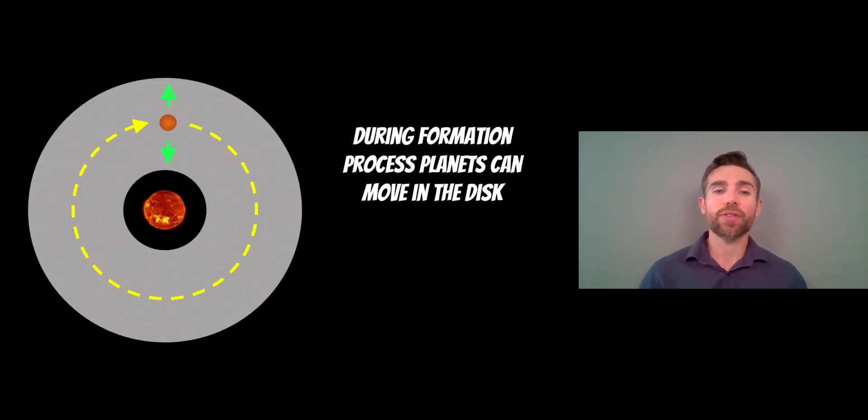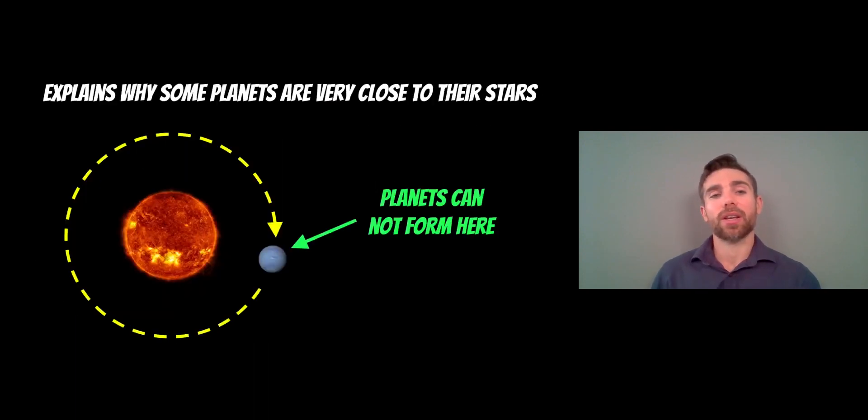During the formation process these planets can move around in this disk. In this gas disk the planets can move inwards and outwards. There are a few different types and that will dictate how it moves and how it migrates. It also explains why some planets are quite close to their stars or located in very weird configurations. One of the prime examples is hot Jupiters. Hot Jupiters are these massive planets like Jupiter size and above that are located very close to that star.